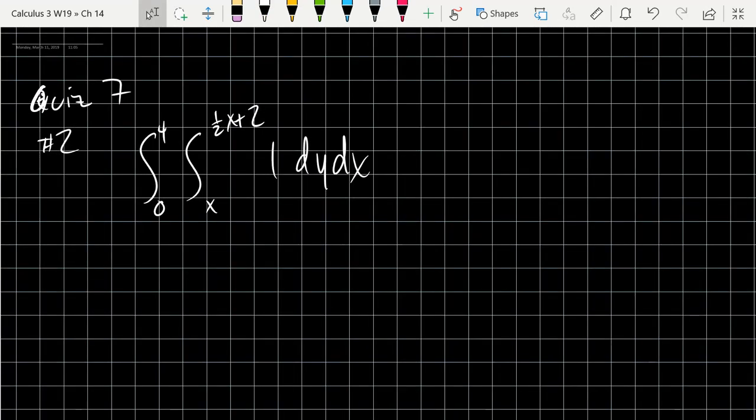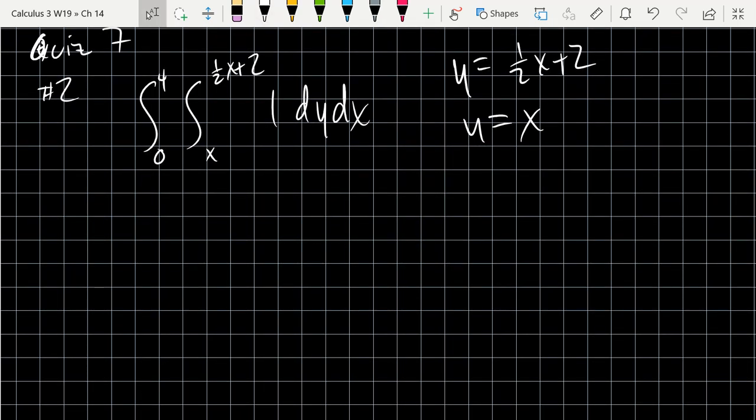So we want to turn this backwards, so we're going to pick the big and the small out here. So the big bound, y equals 1 half x plus 2, and y equals x is the small. Now we graph, and of course we're going between x values between 0 and 4.